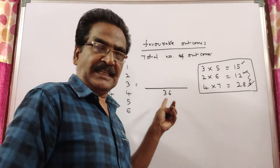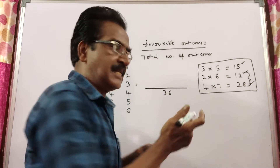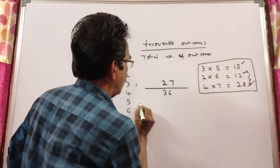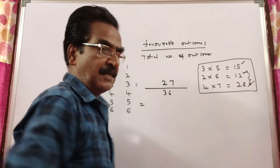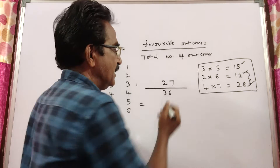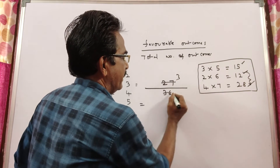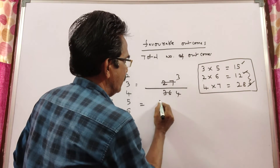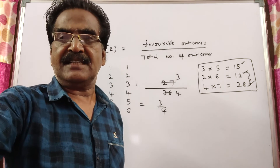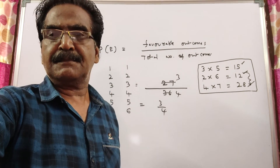So total 36 outcomes, in the remaining 27 pairs the product is even. That gives us 27 out of 36, which simplifies to three by four. So three-fourths is the required probability. Thank you friends, have a nice day.